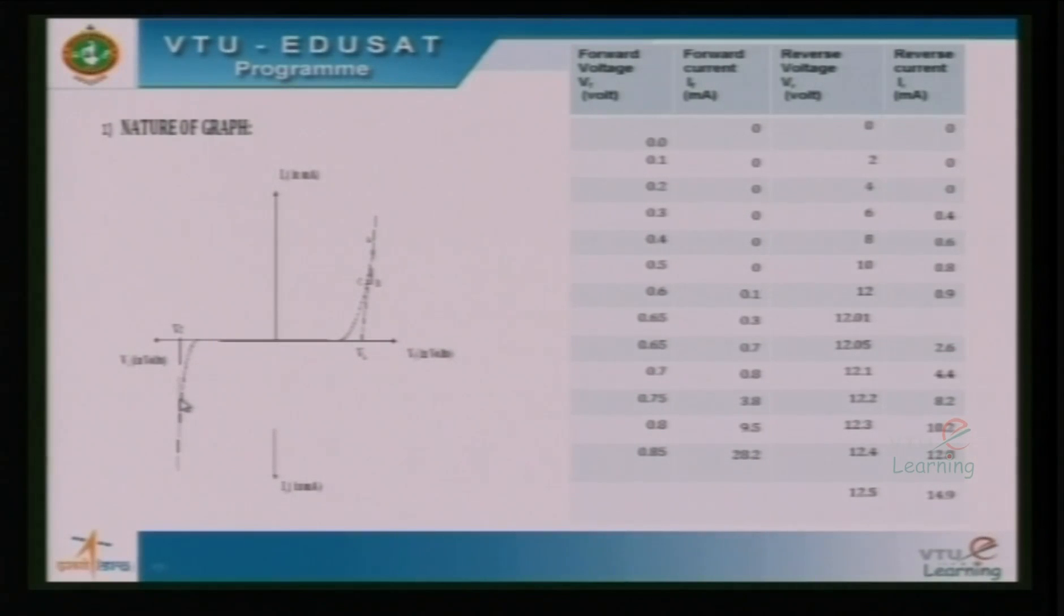The slope is taken in the linear region of the curve will give you the forward resistance of the zener diode which is observed to be very small as same as that of ordinary diode ranging from 2 to 3 ohms.